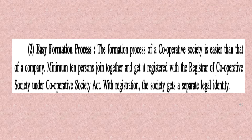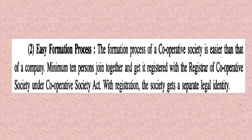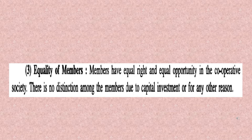Easy formation process: The formation of a cooperative society is easier than that of a company. A minimum of 10 persons join together and get it registered with the Registrar of Cooperative Societies under the Cooperative Societies Act. With registration, the society gets a separate legal identity. When 10 or more members unite and apply to the Registrar for registration, a separate legal entity comes into existence.